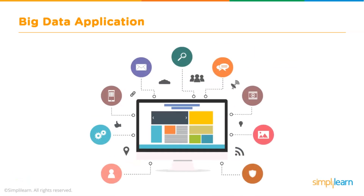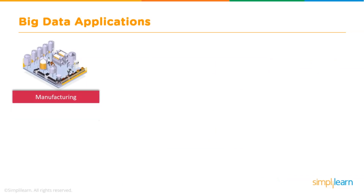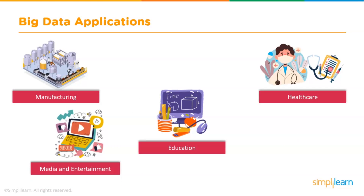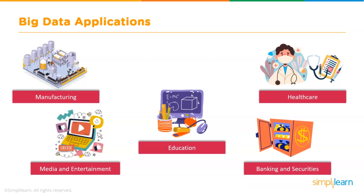By examining vast amounts of data, Big Data helps firms make better decisions. Sources include server logs, internal data streams, social media content, activity reports, customer texts, emails, phone call details, and machine data gathered by sensors. Big Data finds its applications in various sectors like manufacturing, healthcare, education, media and entertainment, banking, and securities.